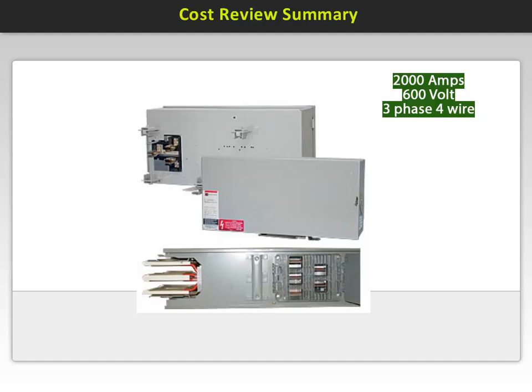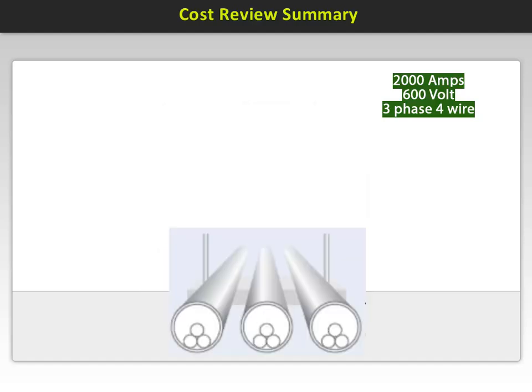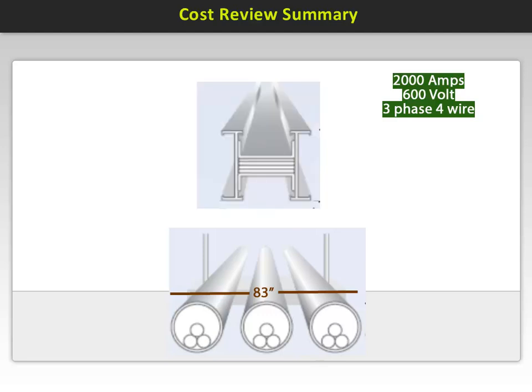To accomplish this, you would need a quantity of five 500-MCM cables and 6-inch rigid conduit. This would require 83 inches of width to arrange the conduit. In contrast, here's what it looks like with Copper Busway. Note that the same 2,000 amps can be supplied in a width of 8½ inches. This represents a much smaller footprint.